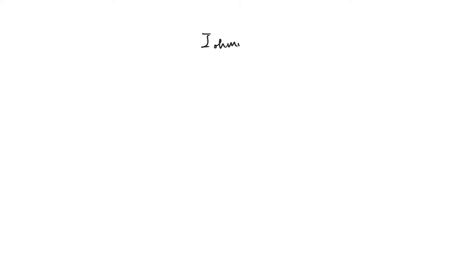We obtained an expression for ohmic current when we have a velocity-field relationship that is nonlinear. Now we want to find out how this affects saturation. The best way to do this is to take the expression of ohmic current and differentiate it with respect to VDS — specifically, take the partial derivative with respect to VDS and equate the result to zero.